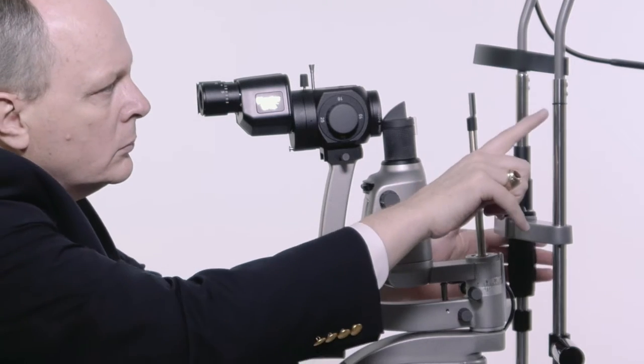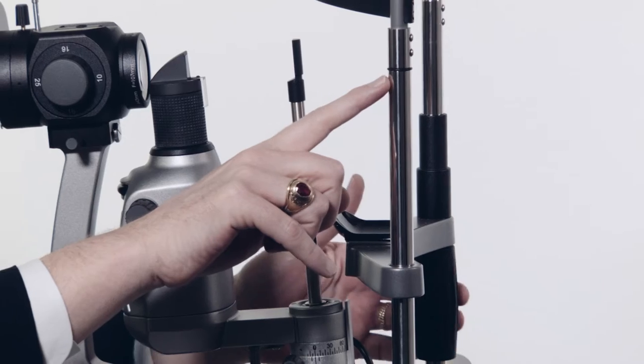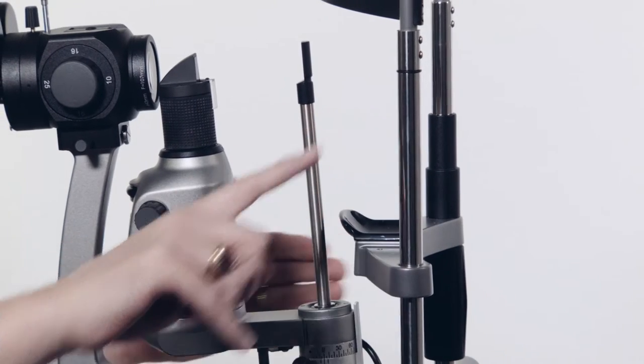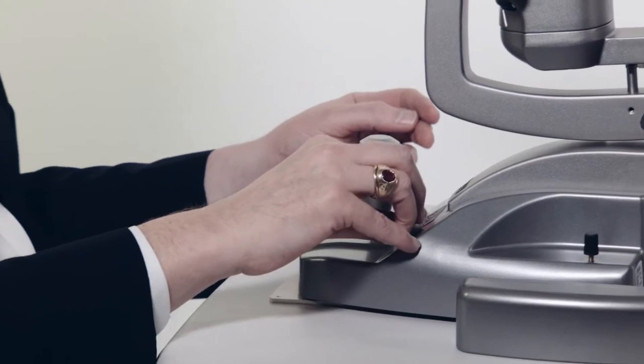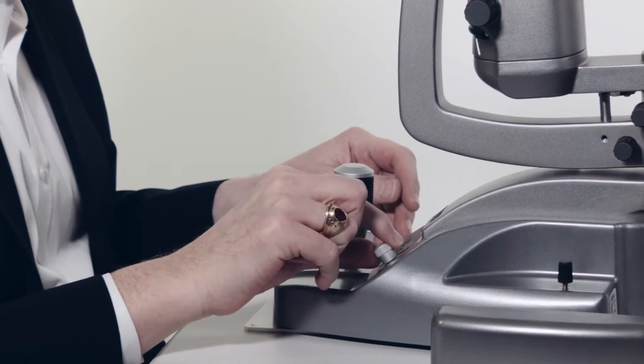Adjust the chin rest height so that the patient's eyes are level with the height mark on the chin rest support. Switch on illumination using the main power switch. Adjust illumination using the rheostat near the joystick.